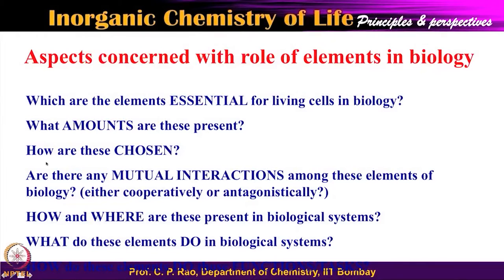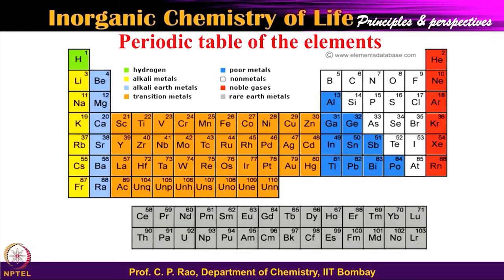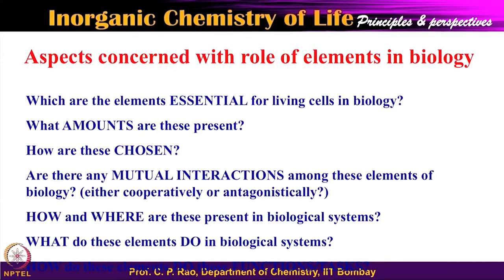So you have: which things are essential, how much amount they are there, who chooses all this, how are these chosen, whether there are any interactions. If so, where are these present and how are they present? A bit of it you already noted from my earlier slides — they are present in at least one of the things, the enzymes — and what do they do in biological systems? All of this is important when you look at the inorganic role of these elements in biology, whether all or only part of the elements are essential.